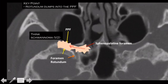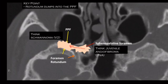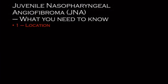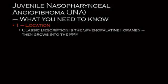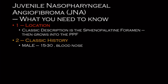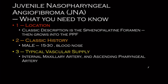A lot of people say 'PPF' — it's almost always in the PPF, but it didn't start there; it grows into there. What you need to know: location — sphenopalatine foramen growing into the PPF. Classic history, and this is really useful: it's a male teenager with a bloody nose. Typical vascular supply is branches of the external carotid, sometimes internal maxillary, sometimes ascending pharyngeal.